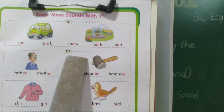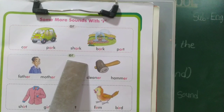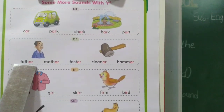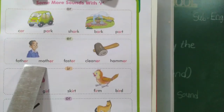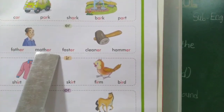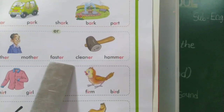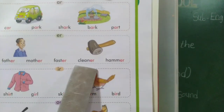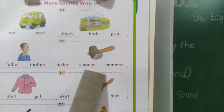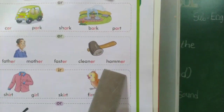Next, E-R. E sound: E. R sound: R. Together say ER. F-A-T-H-E-R — father. M-O-T-H-E-R — mother. F-A-S-T-E-R — faster. C-L-E-A-N-E-R — cleaner. H-A-M-M-E-R — hammer.